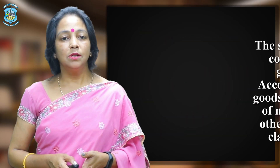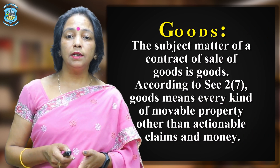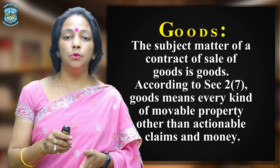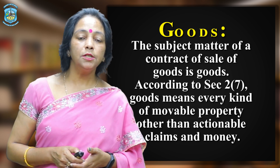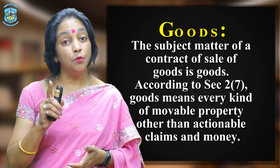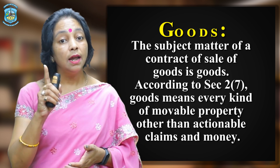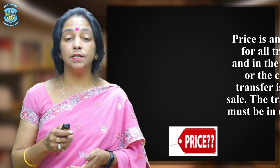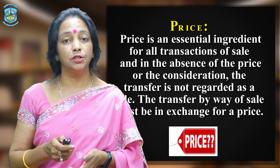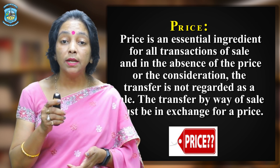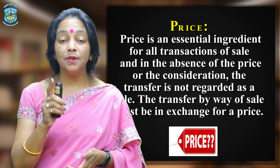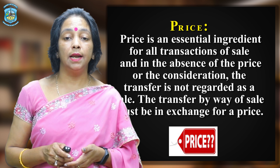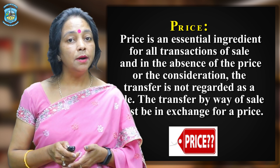The second essential element is goods. The subject matter of a contract of sale of goods is goods. According to Section 2 subsection 7, goods means every kind of movable property other than actionable claims and money. Price is the third essential element — it is an essential ingredient for all transactions of sale, and in the absence of price or consideration, the transfer is not regarded as a sale. The transfer by way of sale must be in exchange for a price.